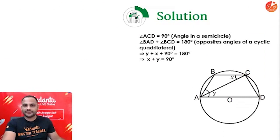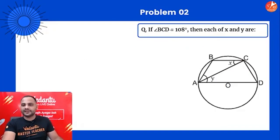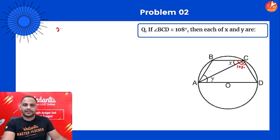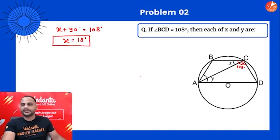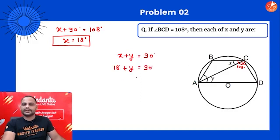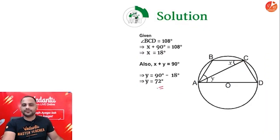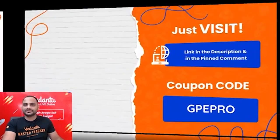If angle BCD = 108°, and we know angle BCD = x + 90°, then x + 90 = 108, giving x = 18 degrees. From the earlier relation x + y = 90°: 18 + y = 90, so y = 72 degrees. Therefore x = 18° and y = 72°.